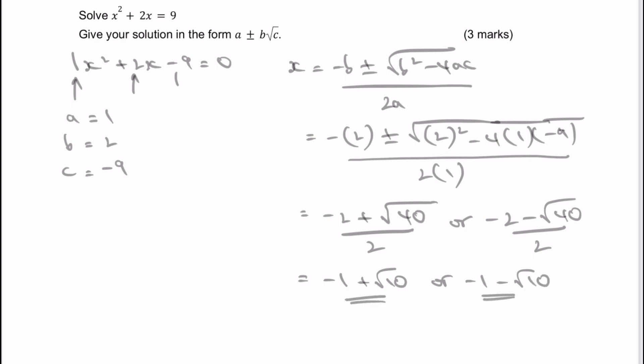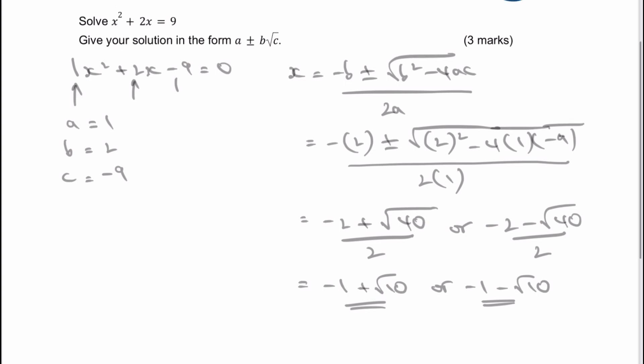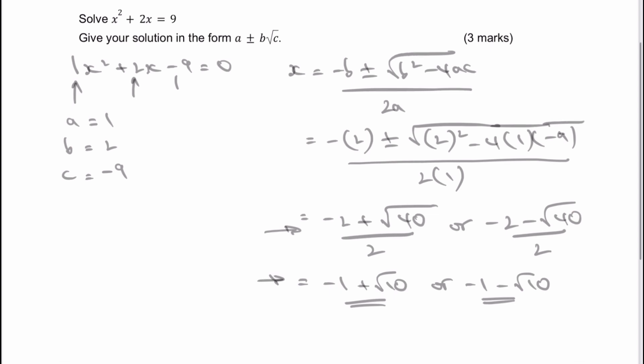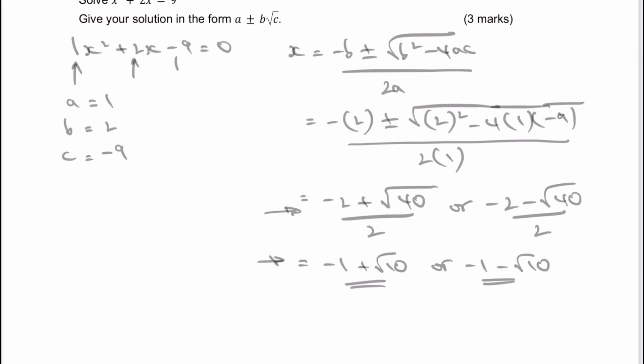Now, you can leave it there if you want to. However, I'm just going to go from this to this just to give you a little idea of how that's actually been worked out. So what we've got, you'll notice that we've got -2 + √40 all divided by 2, which is the same as saying -2/2 + √40/2.